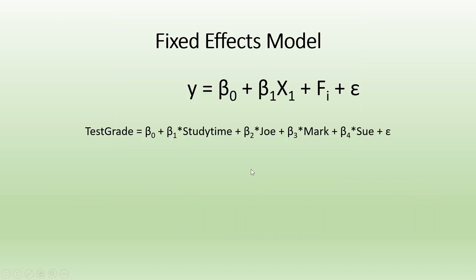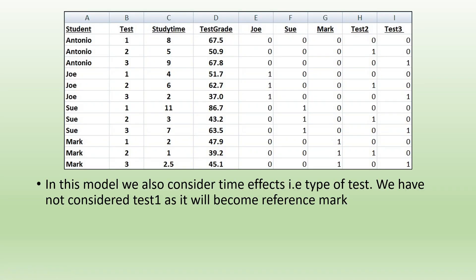The fixed effects model will be: Y = β₀ + β₁X₁ + φᵢ + error, where we have introduced the cross-section category — the student. So the test grade = β₀ + β₁(study time) + β₂(Joe) + β₃(Mark) + β₄(Sue). We have not considered Engineer because it becomes the reference category, captured by the constant β₀. To introduce the time element, one test also becomes the reference category. Here test 1 is the reference category, with test 2 indicated by 1, test 3 indicated by 1, and test 1 again as the reference.